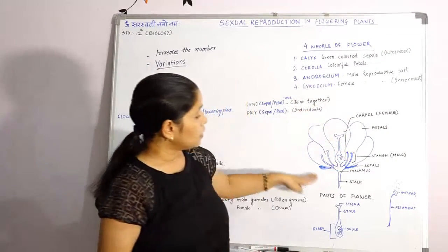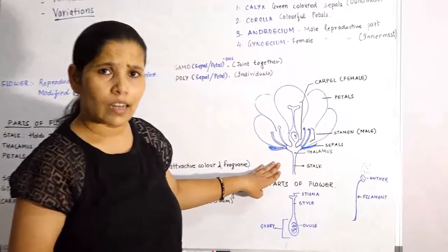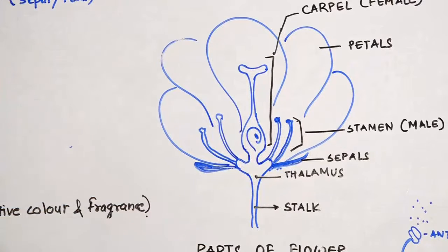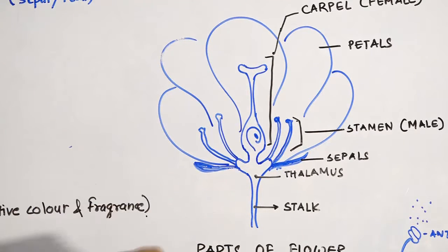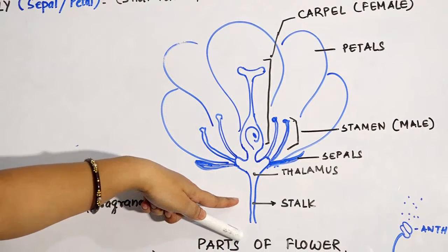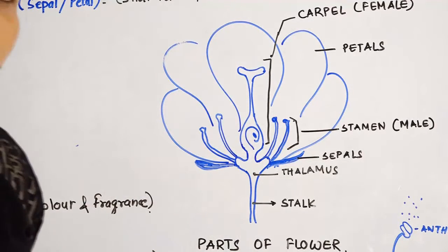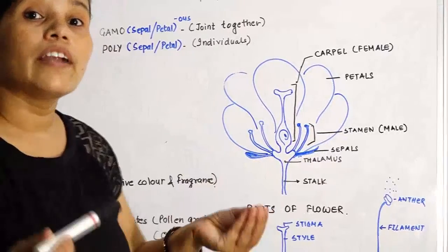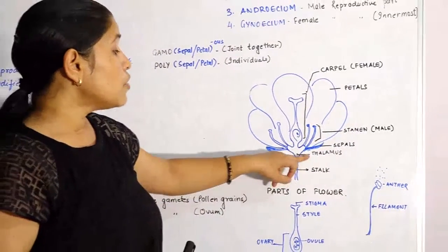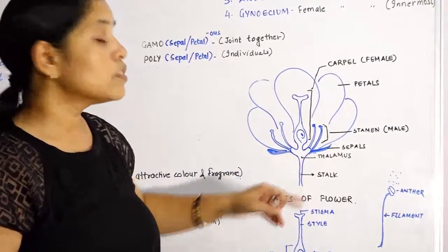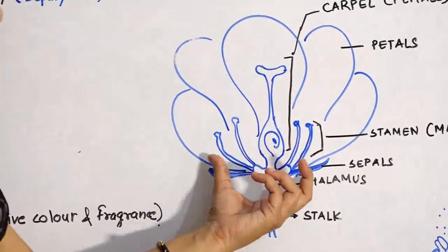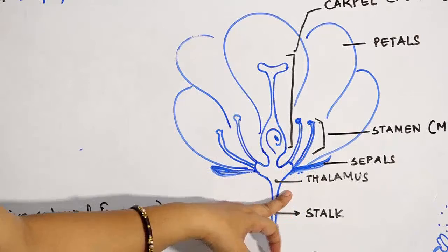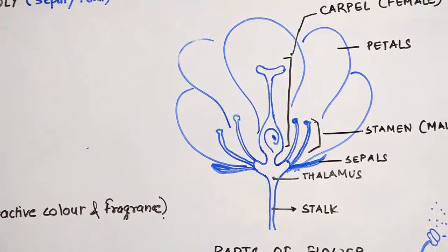You have studied about this flower in your earlier classes. So basically, reproductive parts of flower — I will introduce them from the bottom. This is the stalk. What is the stalk? It holds the flower to the plant. Above that you get the thalamus. Thalamus is the swollen portion of your stalk. When this region gets swollen, the flower is situated above it. Thalamus is simply a swollen portion of your stalk.